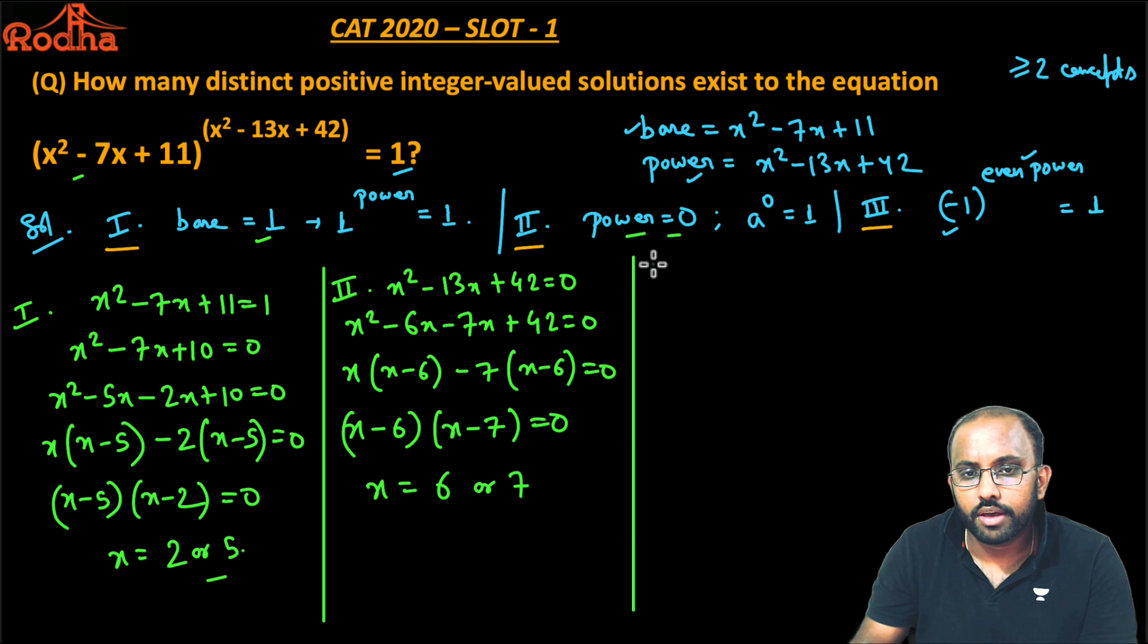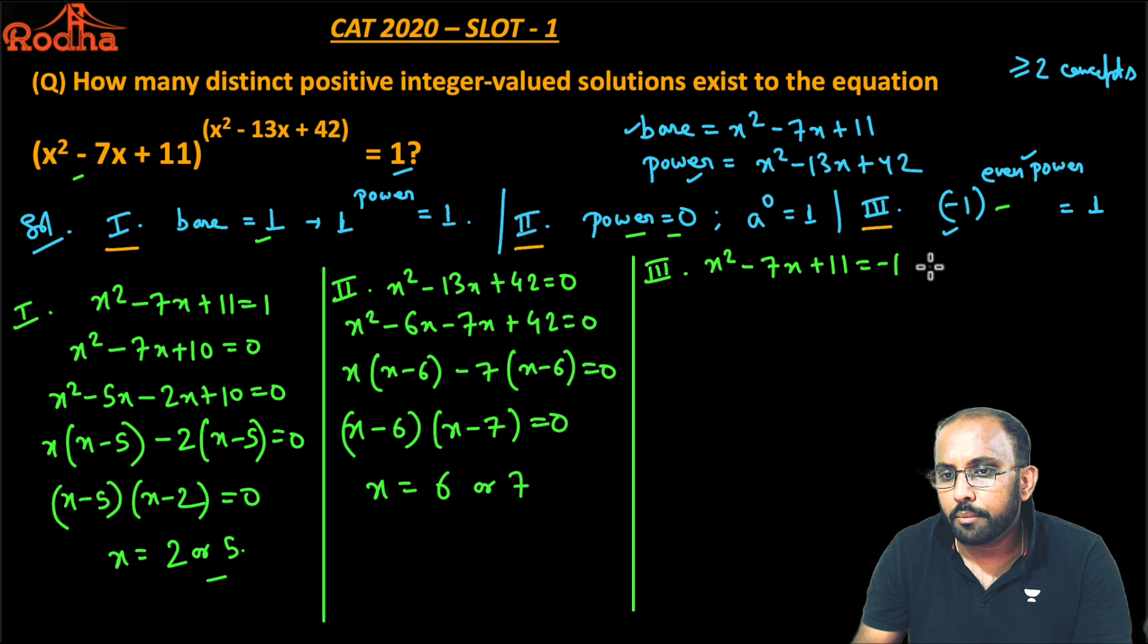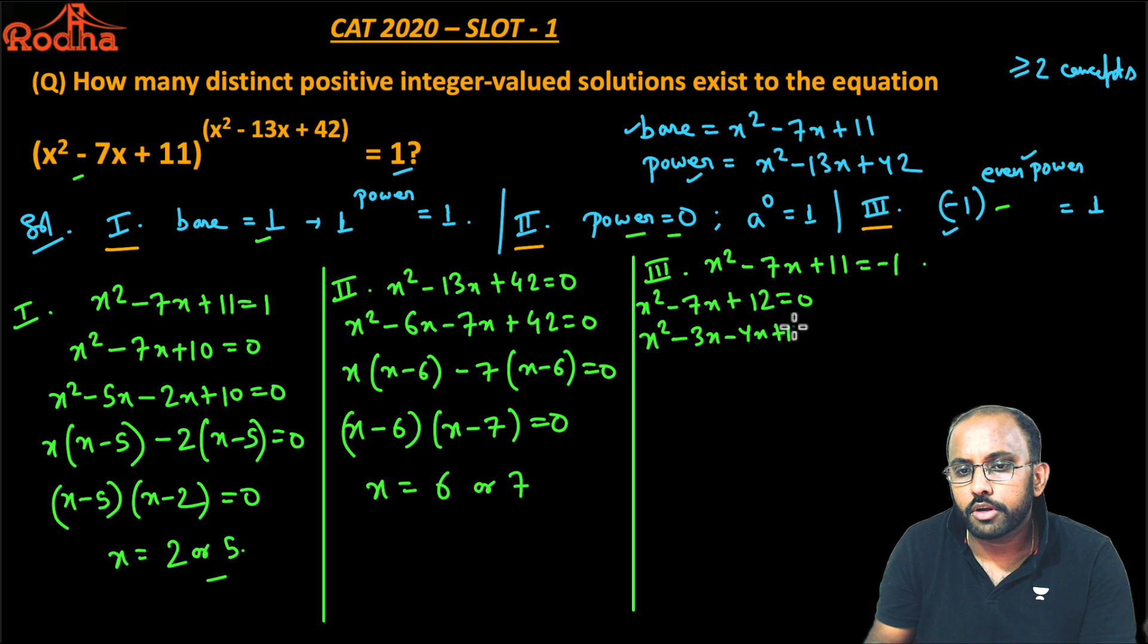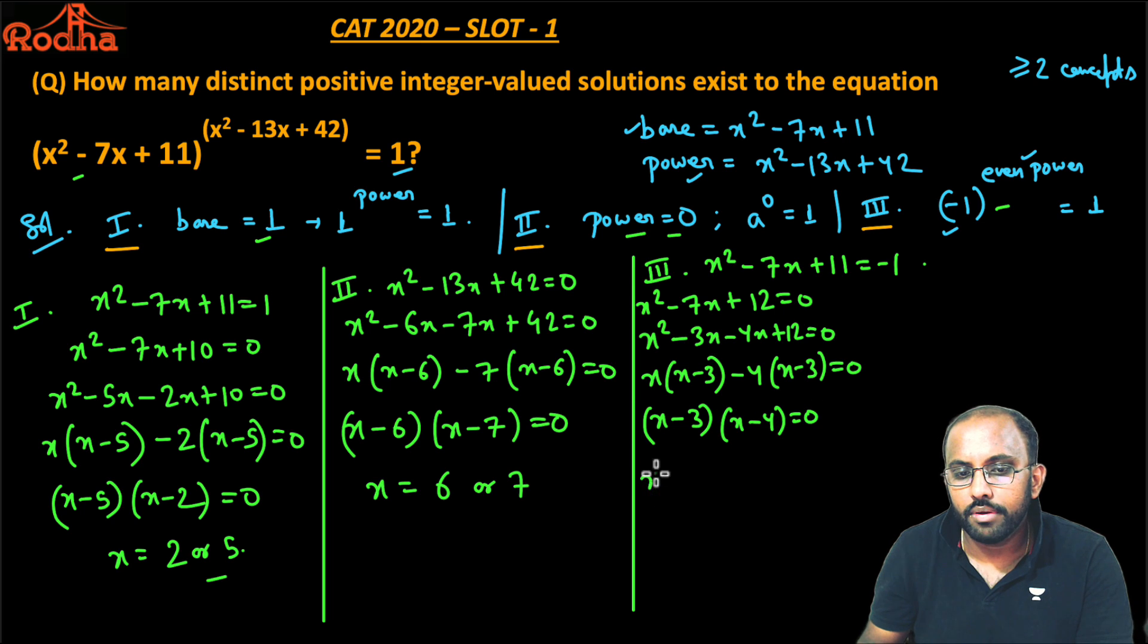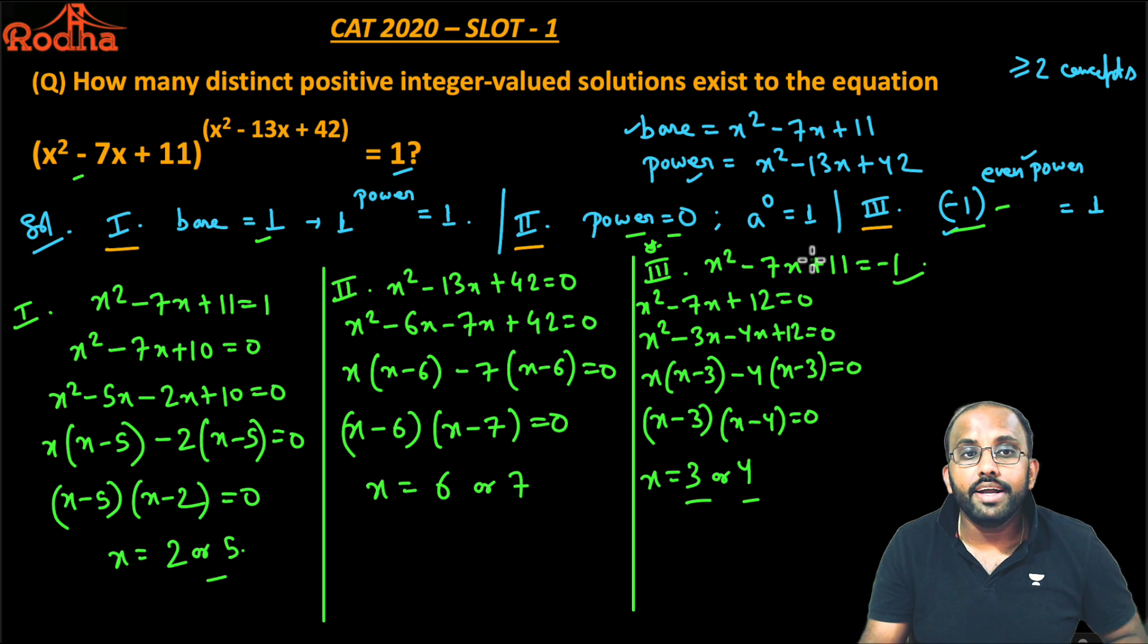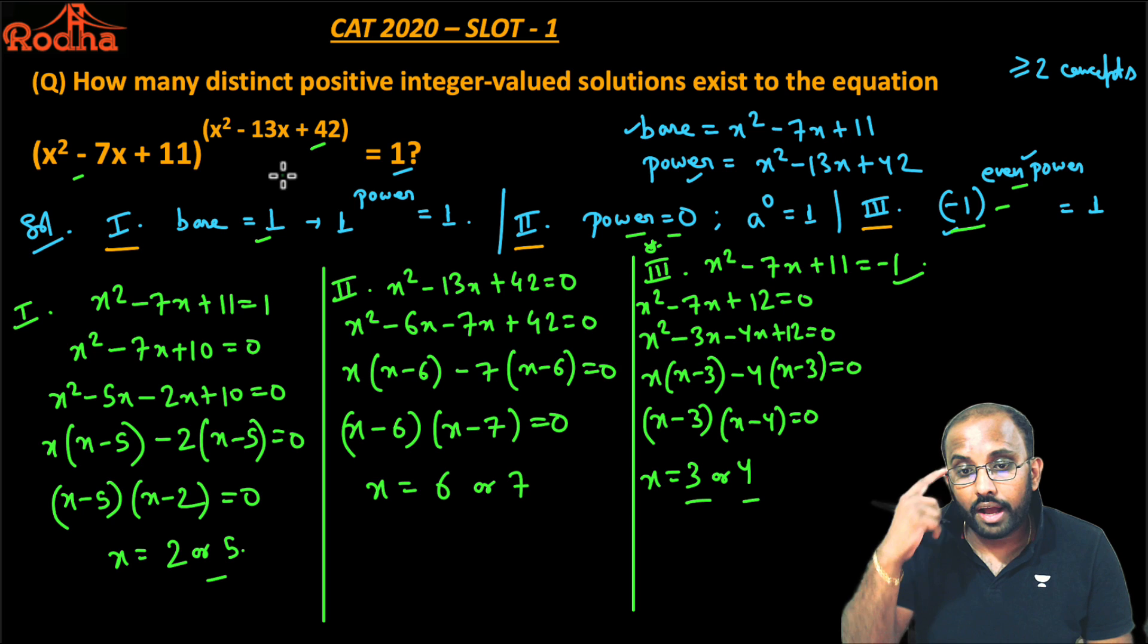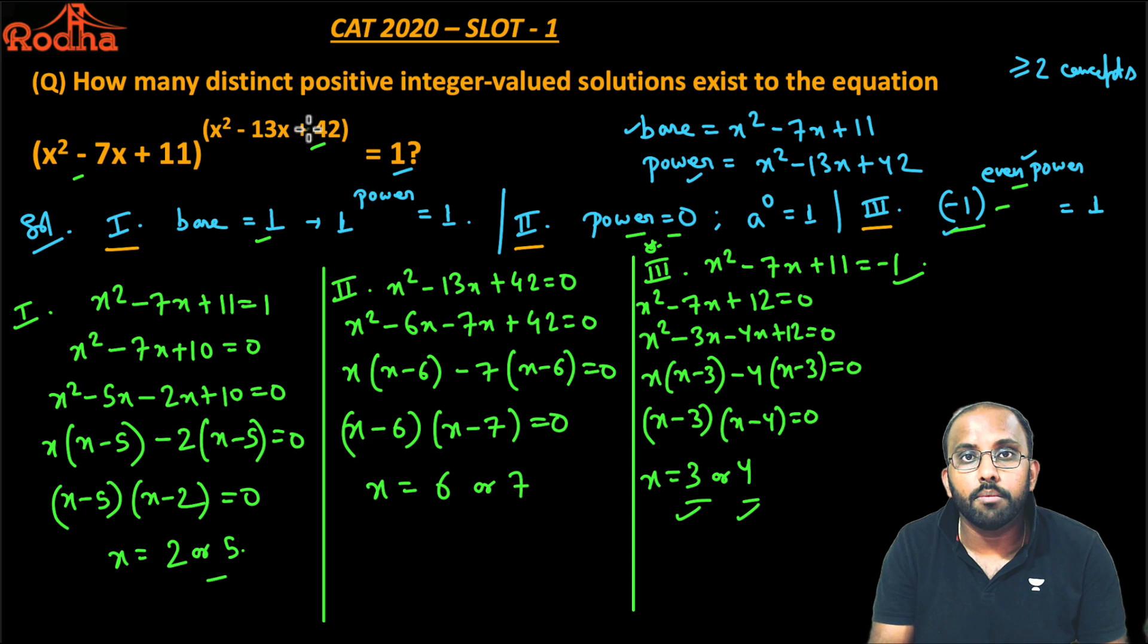Last case is case 3: -1 raised to even power. Base should be -1, so x² - 7x + 11 = -1, giving x² - 7x + 12 = 0. Factorizing as 3 and 4: x² - 3x - 4x + 12 = 0, so (x - 3)(x - 4) = 0. Therefore x = 3 or 4. But be careful here—at x = 3 or 4, my base is -1, but I need to check that only -1 raised to even power gives 1.